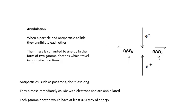Annihilation. When a particle and an antiparticle collide, they wipe each other out — they annihilate each other. Their mass is converted into energy in the form of two gamma photons, which whiz off in opposite directions. Antiparticles, for example positrons, don't last very long. If a positron is created, almost immediately it will be annihilated because it will hit an electron — an orbital electron probably — and they will wipe each other out. Each gamma photon, and there are two gamma photons, will have at least 0.51 mega electron volts of energy.